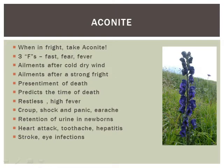Now we're going to start talking about some homeopathic remedies. The first is Aconite. We have the ABCs at the nursery — the ABCs for children: Aconite, Belladonna, and Chamomilla — three great remedies for children. Today we'll start with Aconite. When in fright, take Aconite — it's a great remedy for acute fright. It covers the three F's: when things come on fast, when there's fear, and when there's a fever.